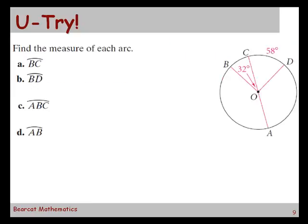So we need to find the measures of these arcs. For A they want us to find the measure of arc BC. How much? It's a minor arc. It's got to equal the measure of the central angle. So it's 32 degrees.